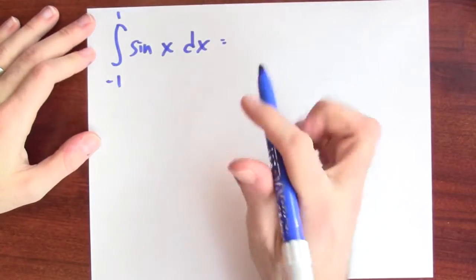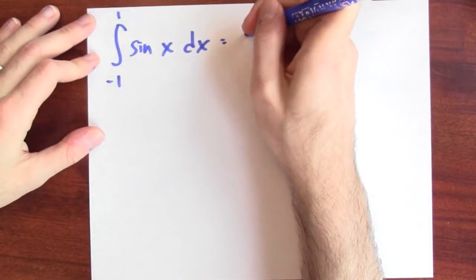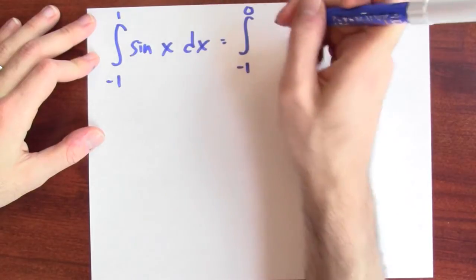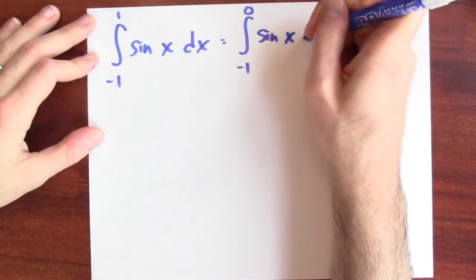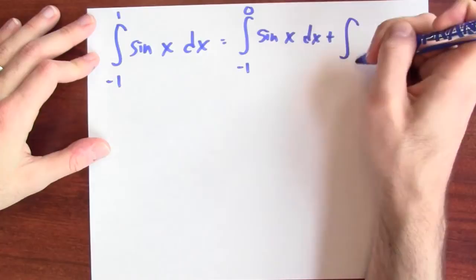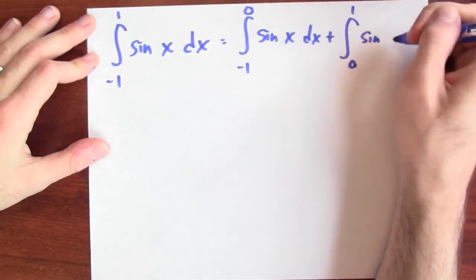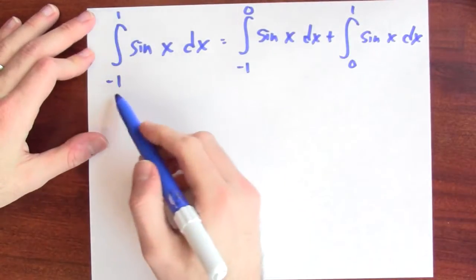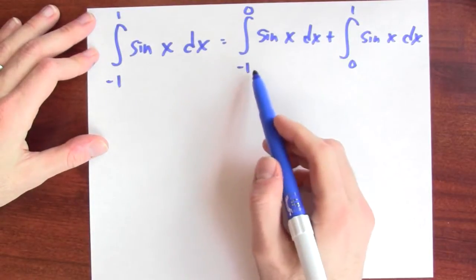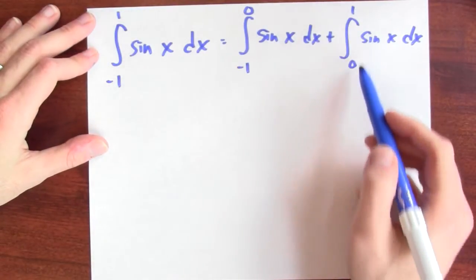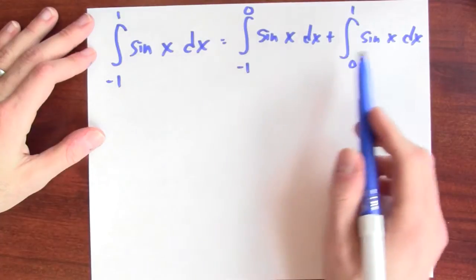And the first thing to think is that if I'm integrating from minus 1 to 1, I can rewrite that as an integral from minus 1 to 0 of sine x dx and add to that the integral from 0 to 1 of sine x dx. If I want to integrate all the way from minus 1 to 1, it's good enough if I just integrate halfway and then integrate the rest of the way.